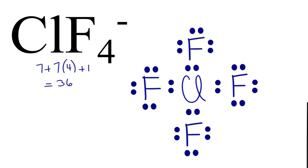We're not quite done, though, because we have 36 valence electrons that we need to use for the ClF4 minus Lewis structure.